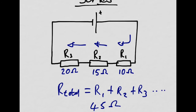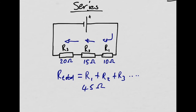So that potential difference has to be shared across the three resistors, and therefore the current is going to go down because the resistance is going up. In series circuits, the current is going to be the same no matter where you measure it. But the potential difference is not the same everywhere — measuring across R1 would give a different reading than measuring across R3.